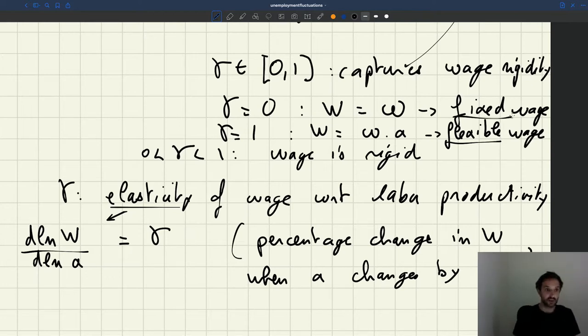If you have an elasticity between 0 and 1, it means that when your productivity changes by 1 percent, so let's say your productivity goes up by 1 percent, your wage will go up, but it's not going to go up by all the way to 1 percent. It will go up by maybe 0.5 percent, 0.2 percent, 0.3 percent, depending on what the value of the elasticity is.